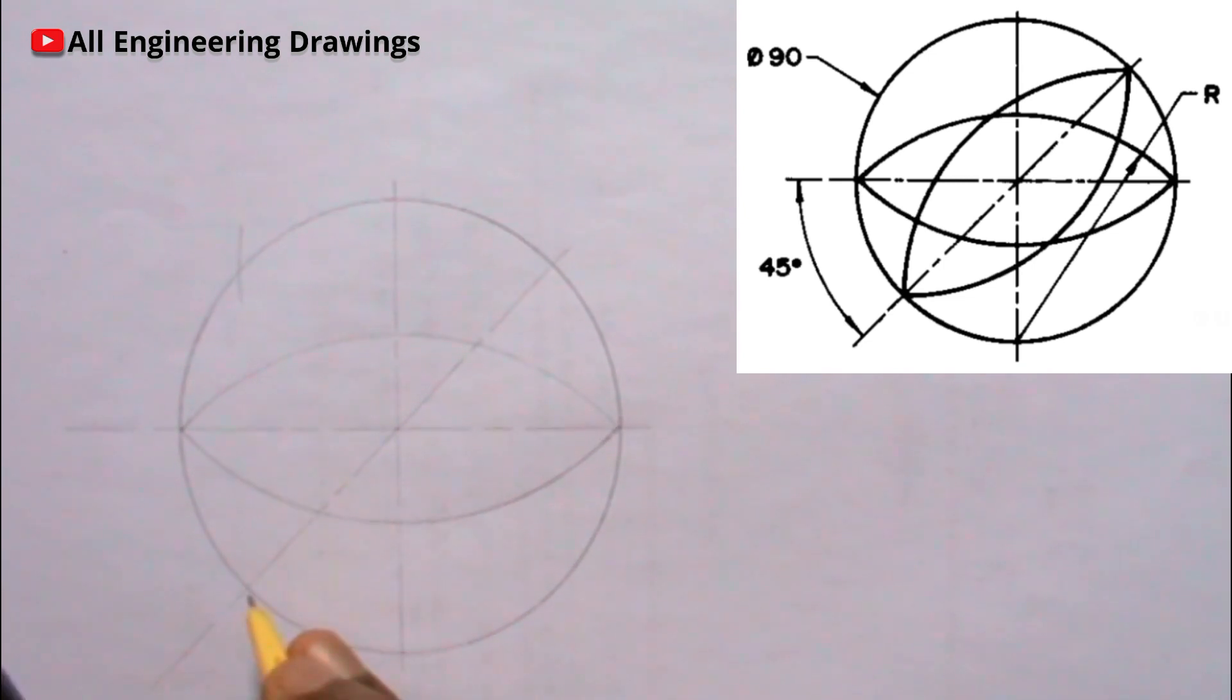Also, place your compass on this point, then cut another arc this way. The point where the arcs intersect.